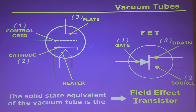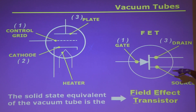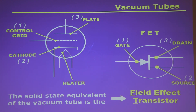The solid-state equivalent to the triode is a field-effect transistor, or FET. The source functions like the cathode. The drain, where the current goes out, looks like the plate. And the gate acts like the grid. Based on the voltage level you put on the gate, you control how much current flows through. You could have a large amount of current going through here controlled by a small amount of voltage on the gate or the control grid. That's how you amplify.